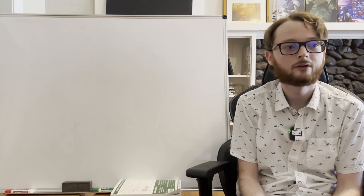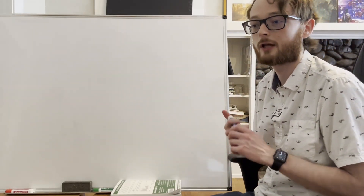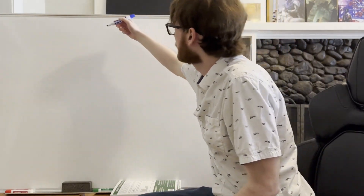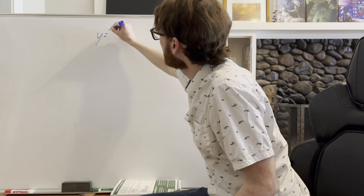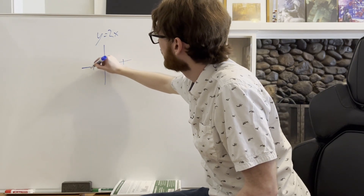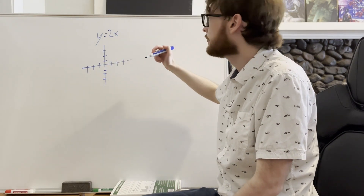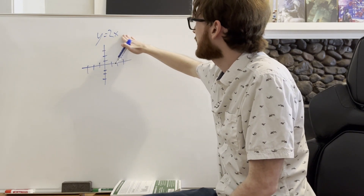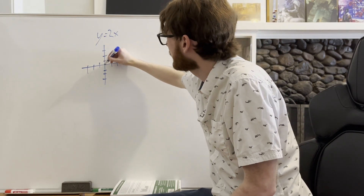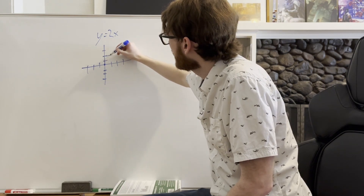Let's start by looking at derivatives. Simply put, a derivative is the rate of change, but that doesn't mean much until you've actually shown what we mean by that. So let's start with a simple case — a line. I'm going to use y equals 2x, which I chose for a specific reason I'll get into later. I'm going to draw some basic coordinate axes. For y equals 2x, we have no y-intercept so we start from the point (0, 0). Our slope is 2, so we rise 2 and run 1 — here's another point on our line.